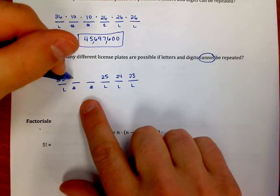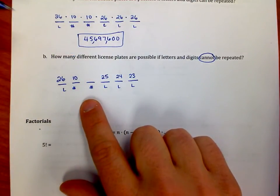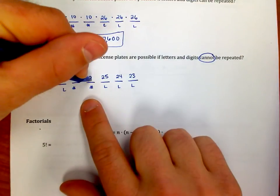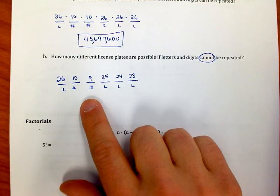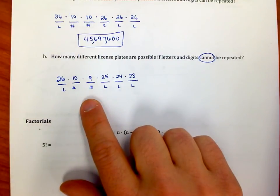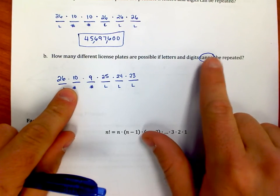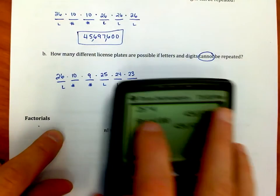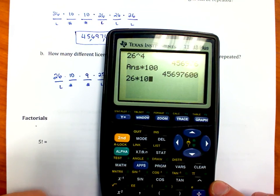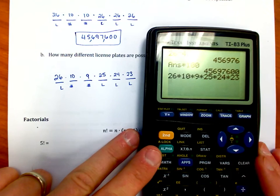As far as the numbers go, I have 10 choices for the first number, but after one of those digits is used, say like the number five or something, now I only have nine choices remaining for this one. And so our problem becomes a little bit different. I have these values that I need to multiply together instead. In other words, I'm going to adjust it whenever things cannot be repeated. So that's something to keep in mind. So what is 26 times 10 times 9 times 25 times 24 times 23?